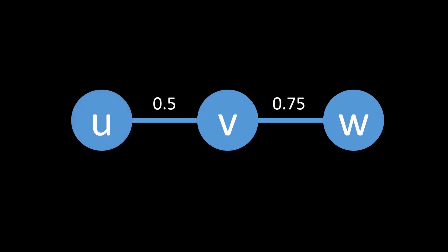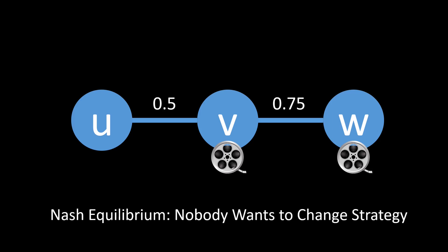Let's look at a simple example network with three nodes. Consider that nodes v and w are caching the movie. We are interested in the so-called Nash equilibrium — a situation where each node has chosen a strategy and no node wants to change their strategy. However, nodes v and w caching the movie is not a Nash equilibrium. For example, node w would rather not cache the movie for cost 1, since w can simply fetch the movie from node v for a cost of 0.75.